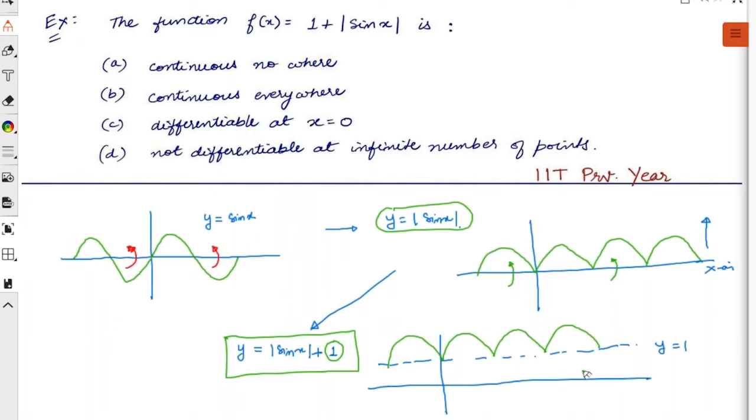Now can you tell the answer directly? Very simple. Continuous? Of course it is continuous—it's not breaking anywhere, so it is continuous everywhere. Differentiable at x is equal to zero? No. You see there are so many sharp corners—sharp corner, sharp corner, sharp corner everywhere.